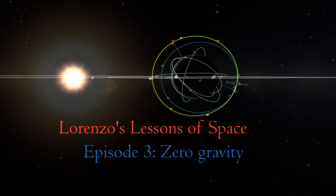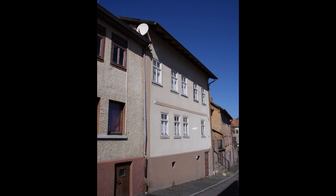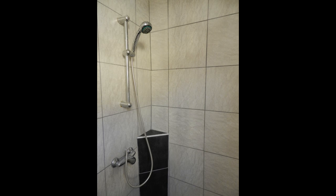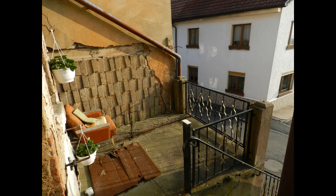Hello ladies and gentlemen, welcome back to the third installment of Lorenzo's Lessons of Space. It's been a while since the second episode — I've been traveling a lot, been to Sweden to look for a PhD and meet some friends there. Also I've been to Germany to try and sell a house there. Unfortunately that did not work and it will soon be up for auction. Here's a picture of that house — if it looks at all interesting to you, pop it down into the comments and I'll send you the details of the auction so you can buy it. It's really a wonderful house.